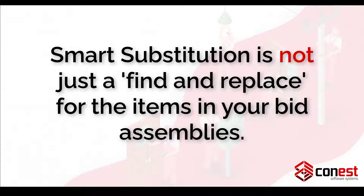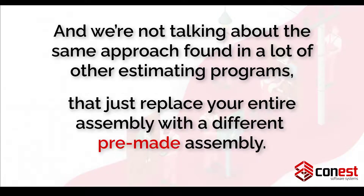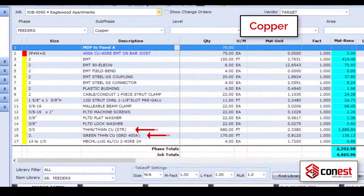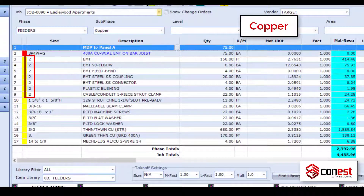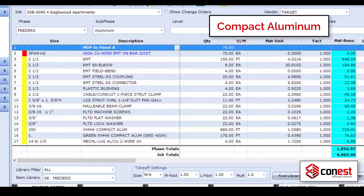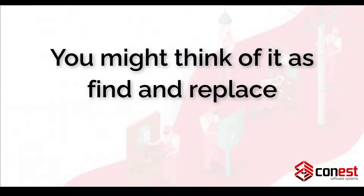It's important to understand that Smart Substitution is not just a find and replace for the items in your bid assemblies. And we're not talking about the same approach found in a lot of other estimating programs that just replace your entire assembly with a different pre-made assembly. Smart Substitution can work just as well with your own custom assemblies, making it easy to swap different items into your takeoff and know that your assemblies are still compliant with the latest NEC code tables. You might think of it as find and replace on steroids.